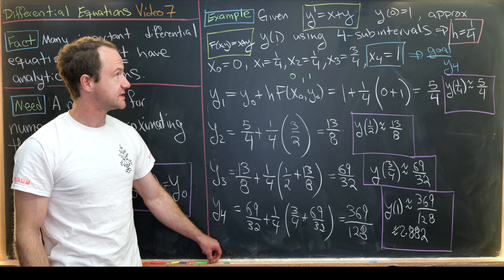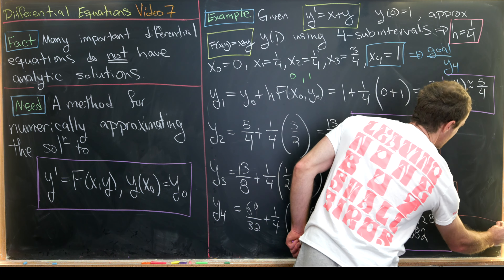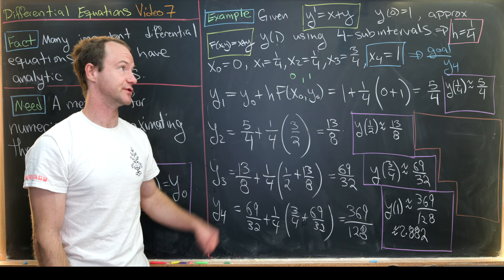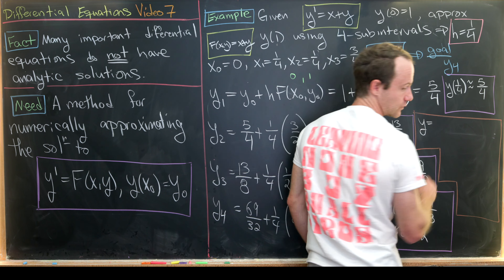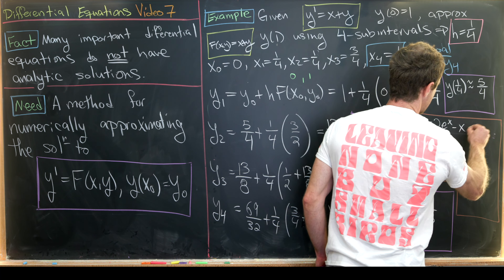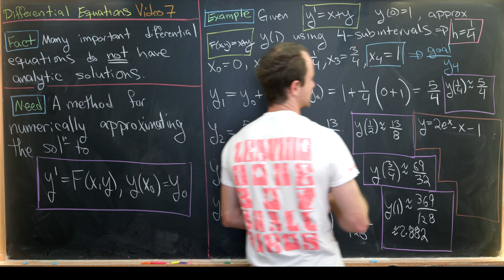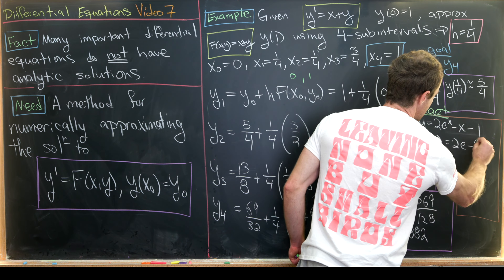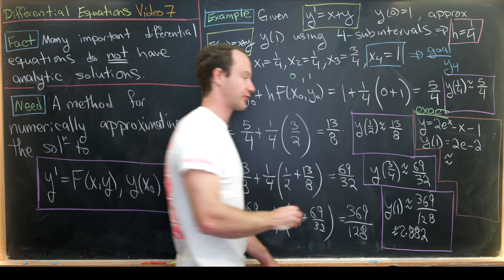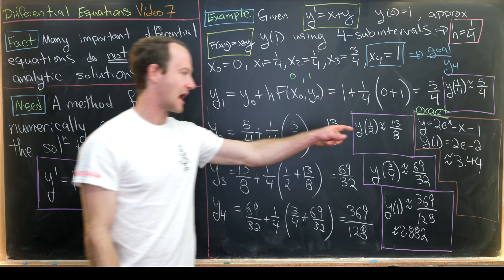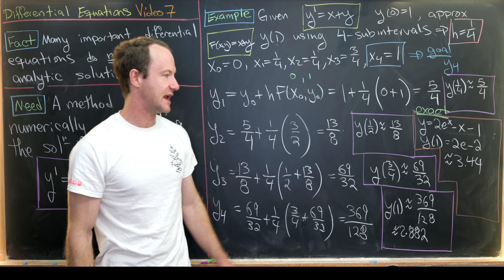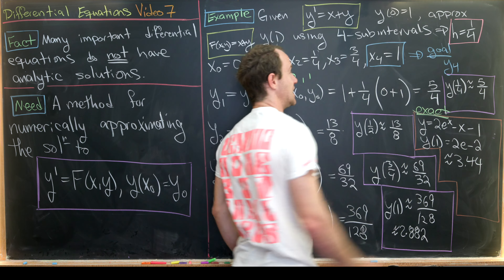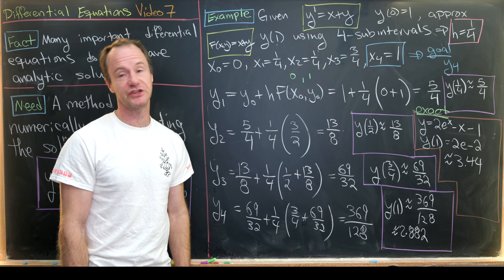Since this is a first-order linear differential equation, we can find an exact solution: y = 2eˣ − x − 1. Evaluating at x=1 gives y(1) = 2e − 2 ≈ 3.44. Our approximation of 2.88 has an error of a little more than half. While the error is quite large, we did use a pretty large h value of 1/4, so taking that into consideration, the approximation is actually reasonable.